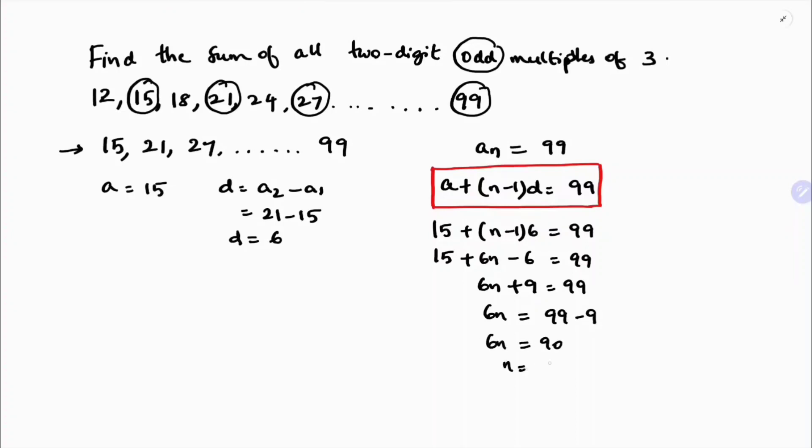6n equals 90. n equals 90 by 6, which is 15. So n is 15.